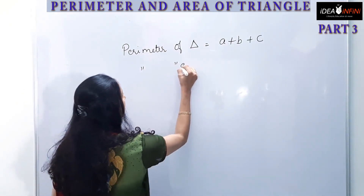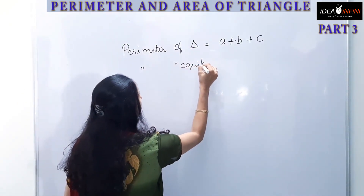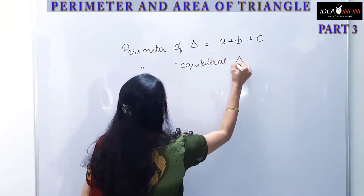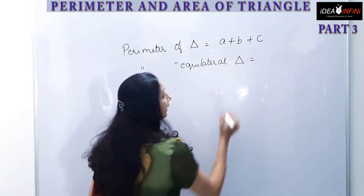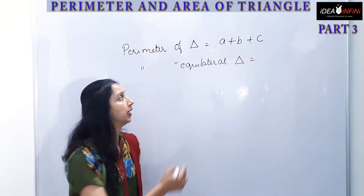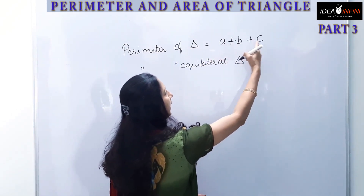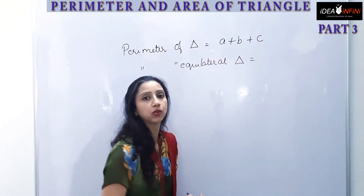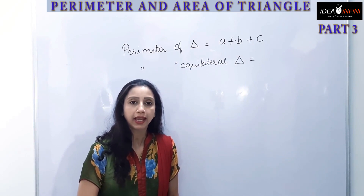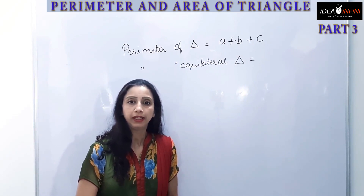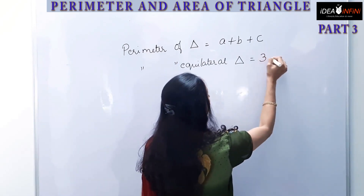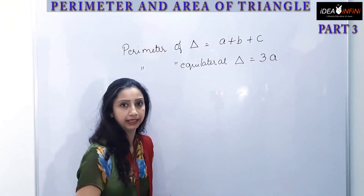In the case of an equilateral triangle, all sides are equal. So if the three sides are a, b, and c, the perimeter will be 3 times a, because a equals b equals c. So it will be 3a — three into side.